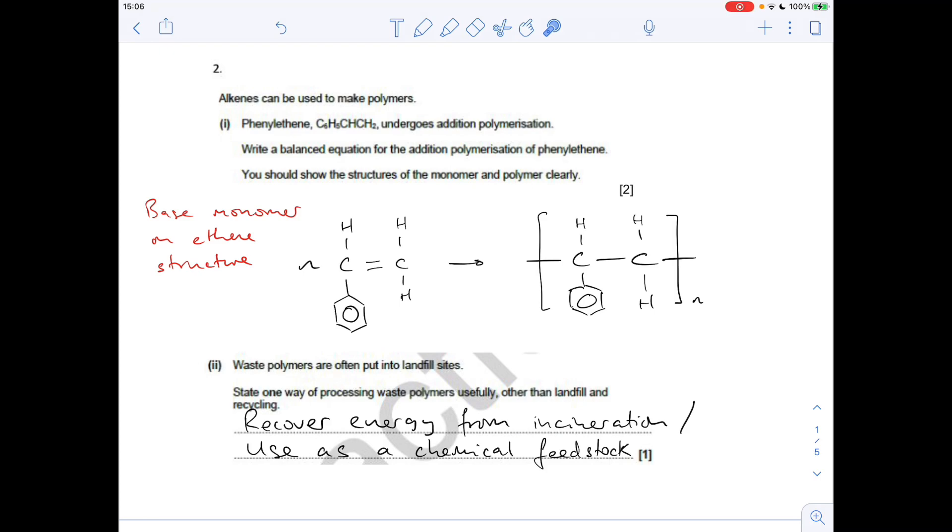Once you've got that, it's very simple to create the polymer chain. So all you do is break the double bond, so you've got a single bond between the carbons, and put your N bonds either side. And obviously for it to be an equation, we need the N in front of the monomer, and the N outside that bracket for the polymer.